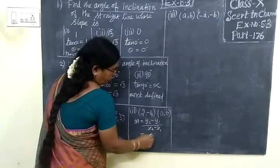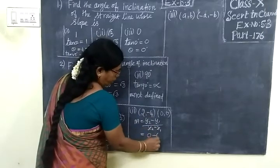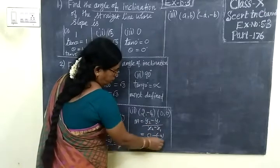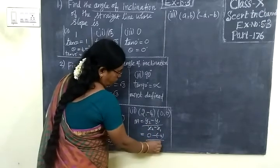This is y₂ which is 0. y₁ is -4. Then 0 minus 2.